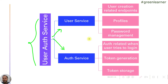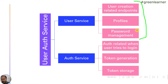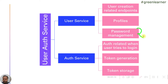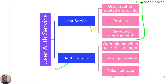The user service will have endpoints related only to user creation — creating, updating, and deleting users. When a user is created it can update the profile, which holds more details about the user, and it handles password management, password verification, and storage validation. Once the user service is in place, we can create the auth service, which uses the user service to validate the user, create and store the token, and handle everything related to authentication.